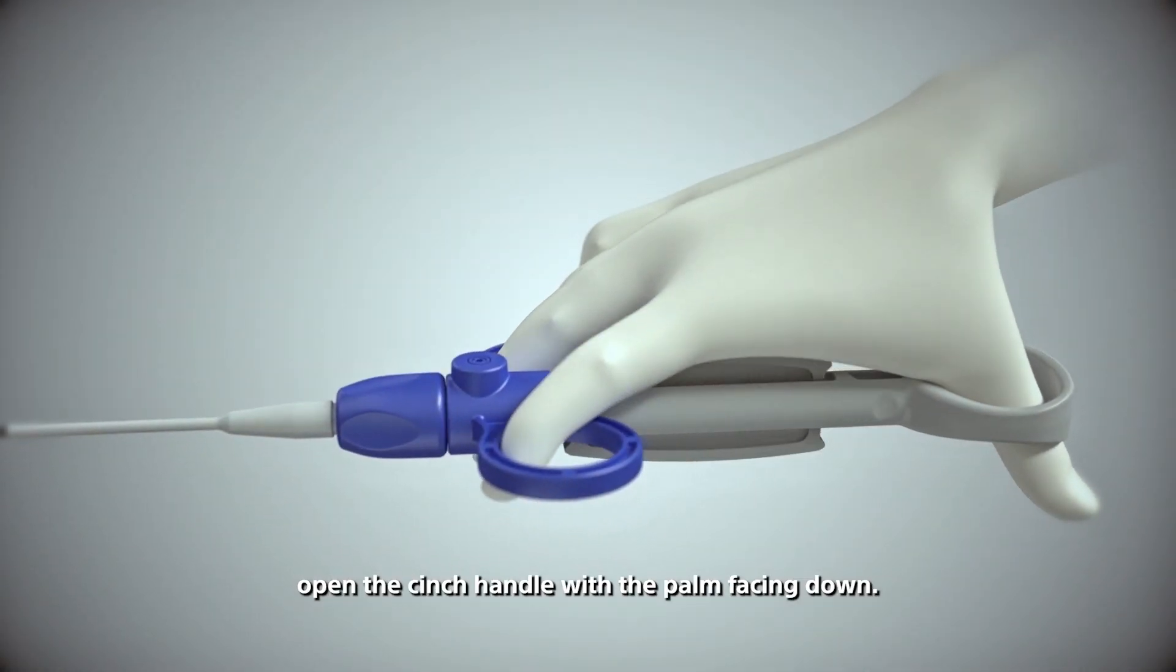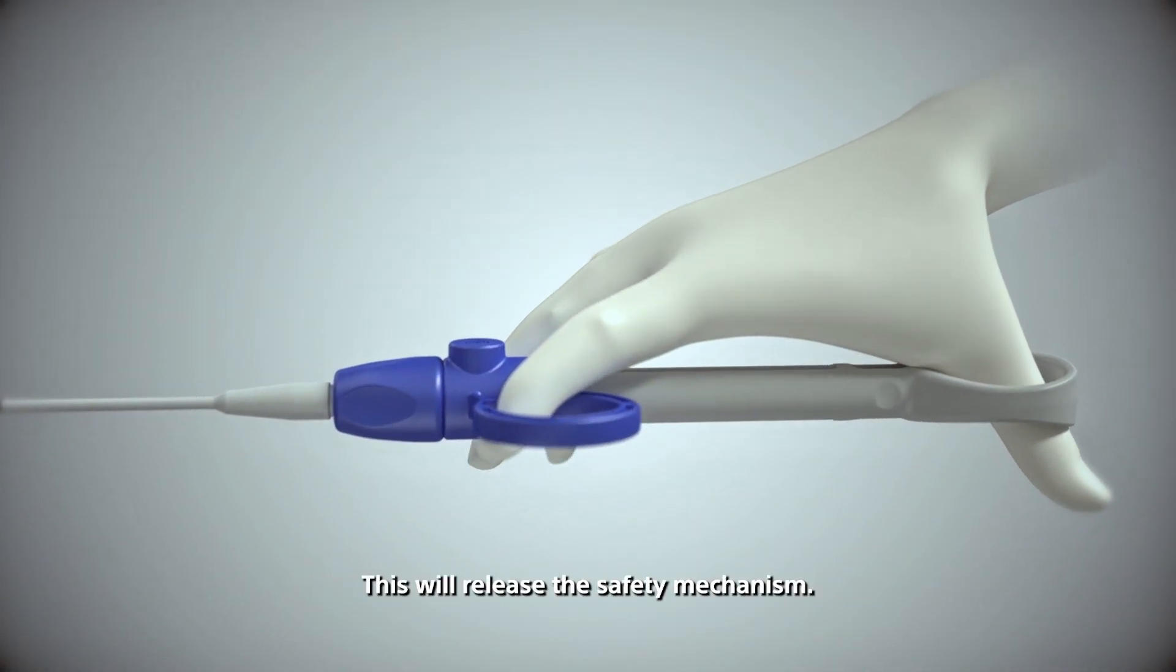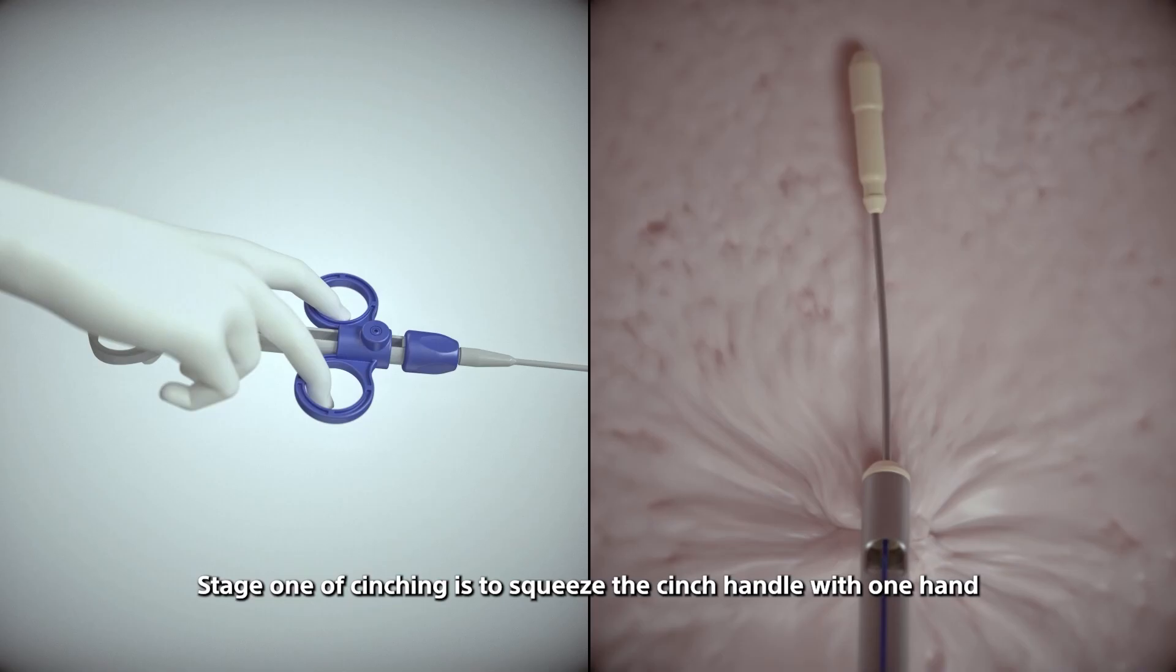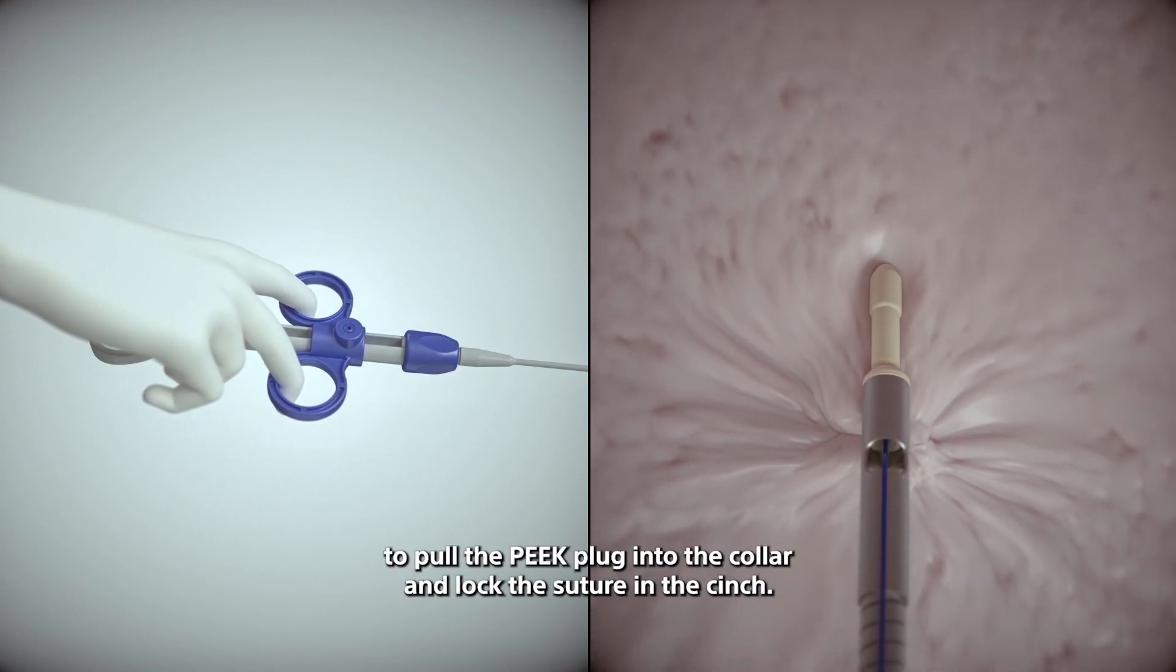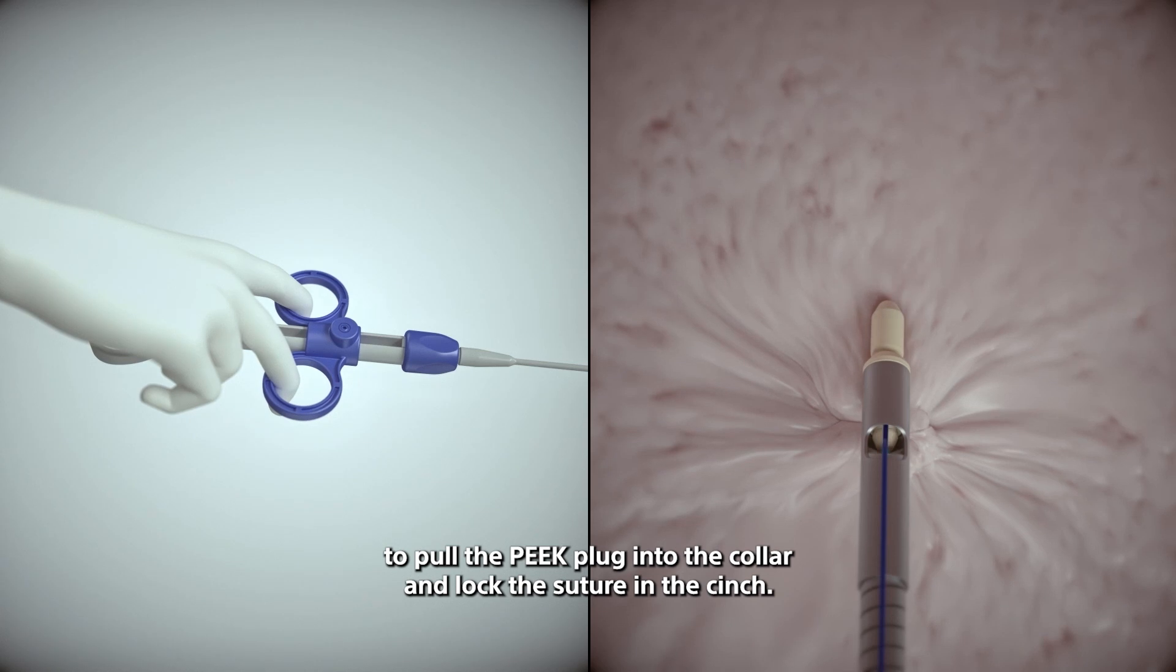This will release the safety mechanism. Stage one of cinching is to squeeze the cinch handle with one hand to pull the peak plug into the collar and lock the suture in the cinch. Stage two of deploying the cinch will require two hands. Continue to squeeze the cinch handle to advance the beaded rod through the peak plug.